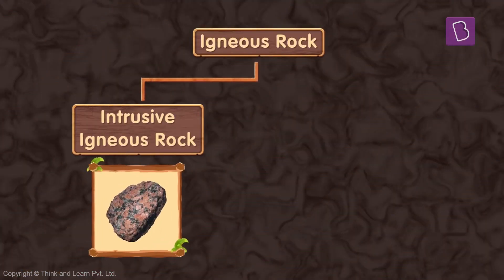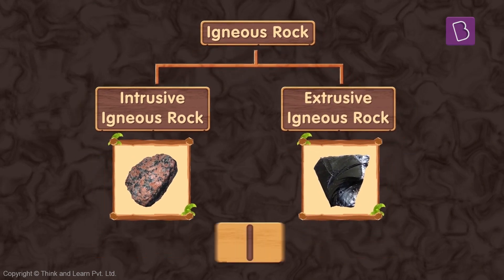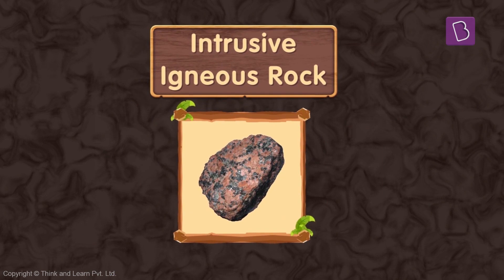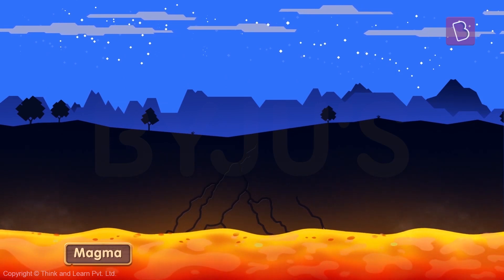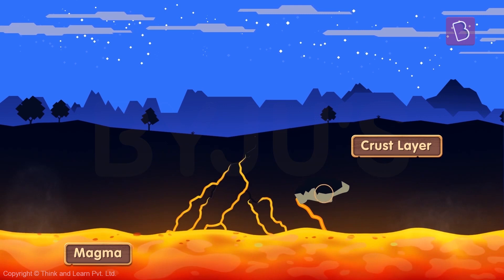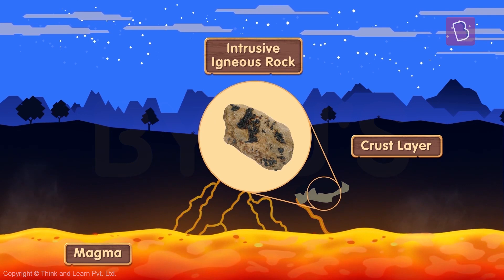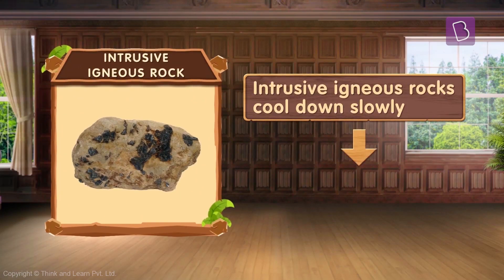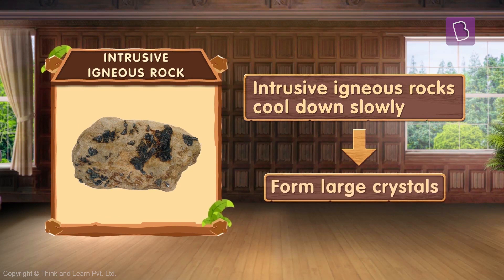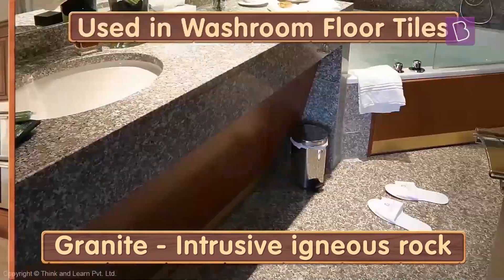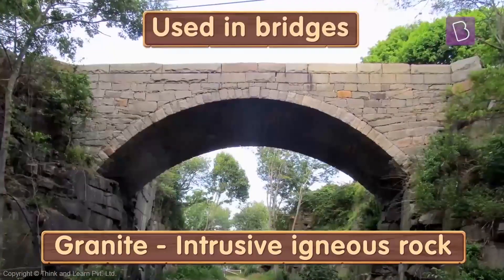Igneous rocks are of two types: intrusive igneous rocks and extrusive igneous rocks. This classification is based on the manner in which these rocks were formed. When hot molten magma from the mantle rises up and reaches the crust layer but fails to reach the surface, it cools down and solidifies in the crust. The rock so formed is called intrusive igneous rock. Intrusive igneous rocks cool down slowly, thus forming large crystals which are quite visible to the naked eye. Granite is an intrusive igneous rock — its crystals are large and easily identifiable. It is used in building kitchen and washroom floor tiles, pavements, monuments, bridges, and buildings.